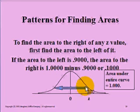If the area to the left of this given z happens to be 0.9, the area to the right of it is 1 minus 0.9 or 0.1, since the area under the total curve amounts to 1.